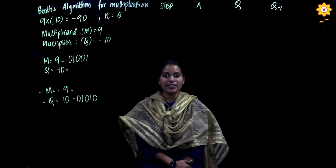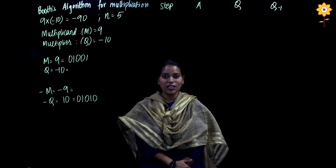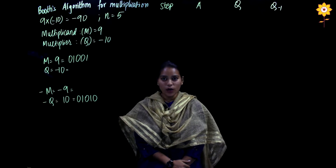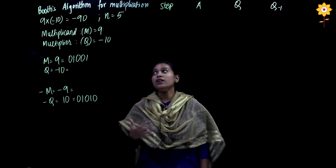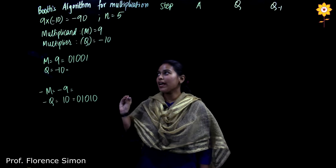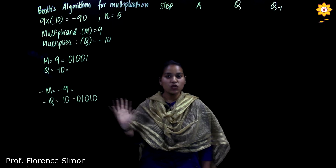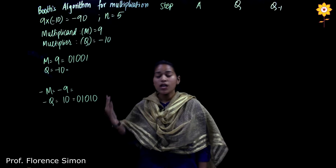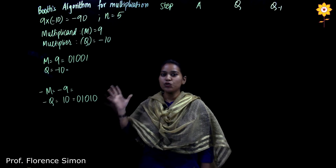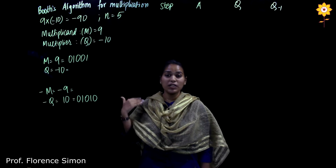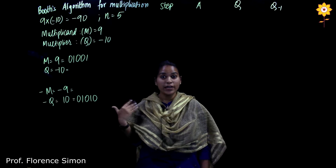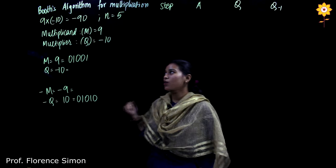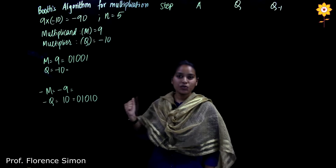Hello everyone and welcome to MES's e-learning channel. In this video we will be solving an example of Booth's algorithm for multiplication with signed numbers — we will have a positive as well as a negative number. This is a very important topic; you should definitely try to solve multiple examples because if you get the right answer, there is a great chance you will get full marks. So just do not skip this topic.